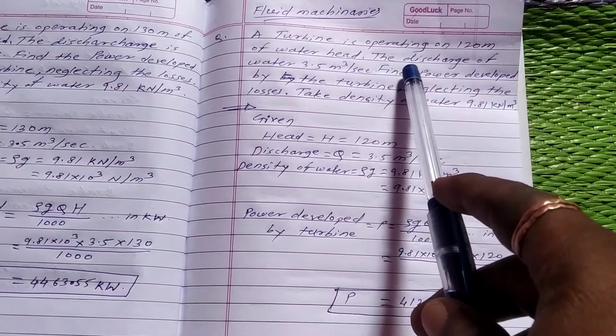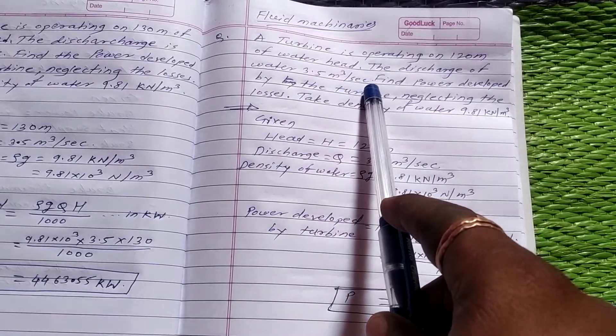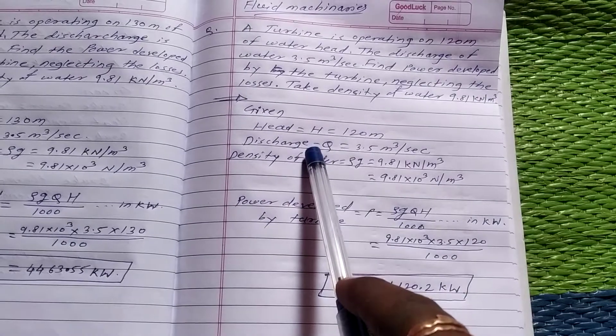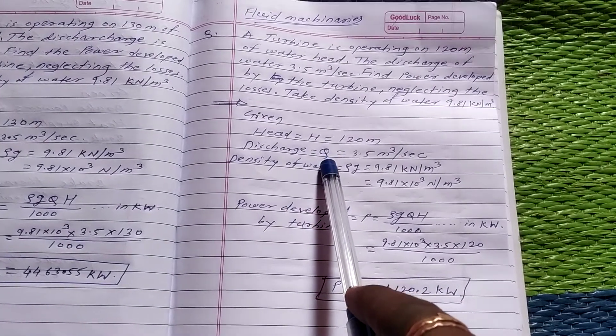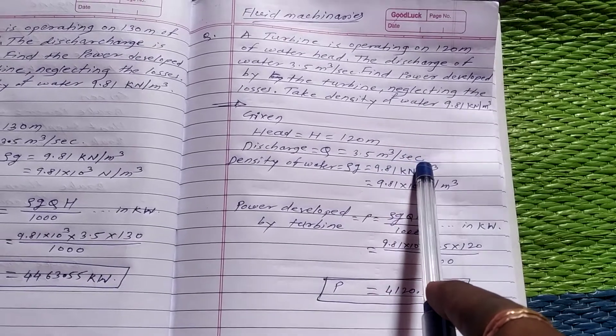Next in the problem, given the discharge of water 3.5 meter cube per second. Discharge Q = 3.5 meter cube per second.